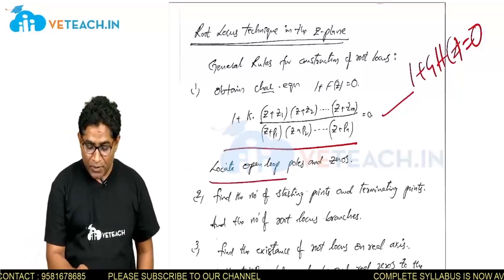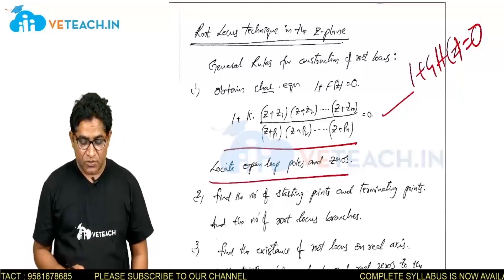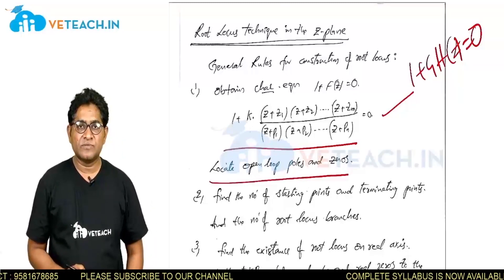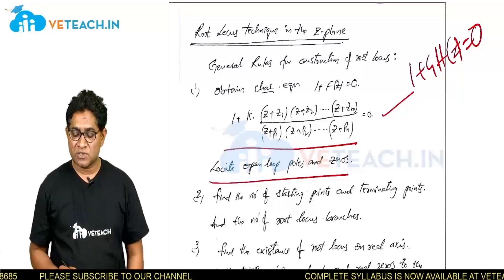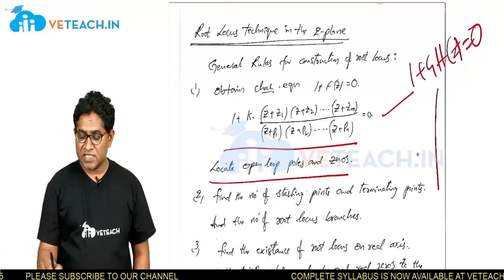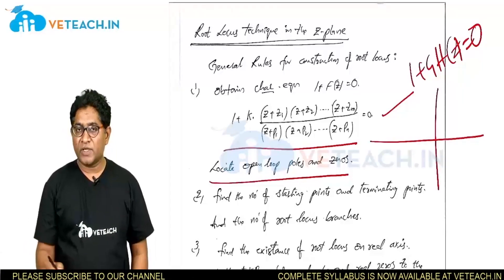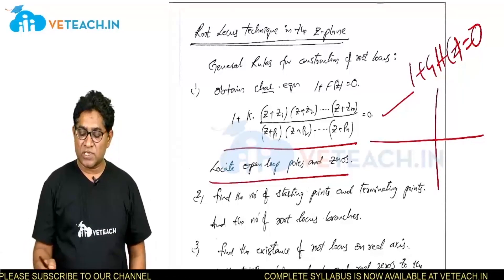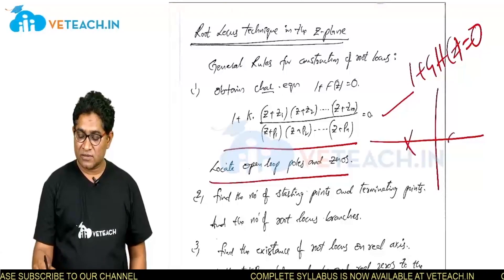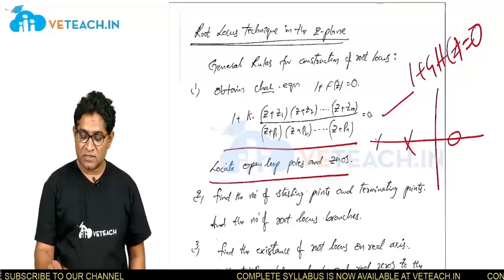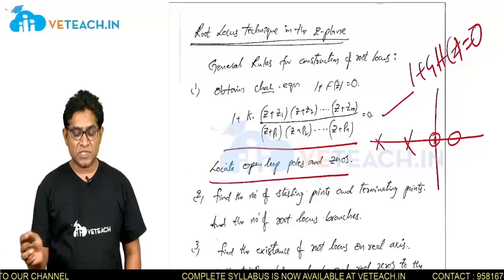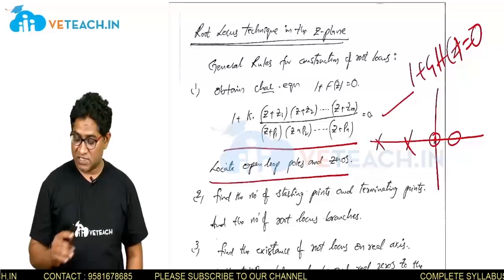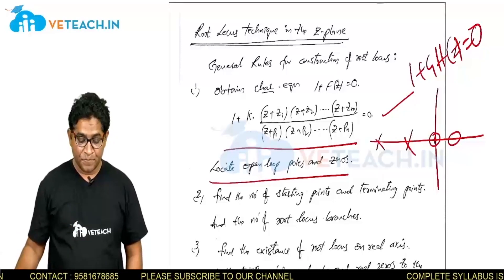Step 1: Locate the open loop poles and zeros. In the z-plane, you locate where the poles and zeros are situated.